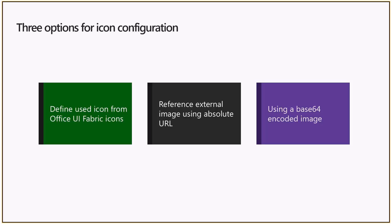For the base64 image, the big advantage is you don't need to deploy an image separately — you encode the whole image as a string and include it in the manifest. However, that string is loaded by SPFx on every page, so you're pulling down that big string every single time you request a page, which is not optimal. It's easier from a deployment point of view but it adds to your payload.